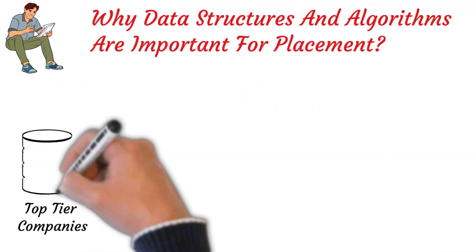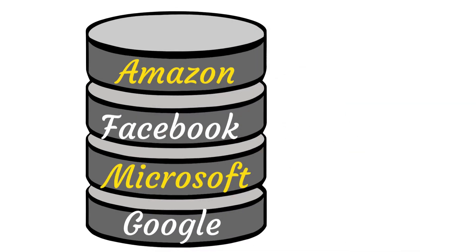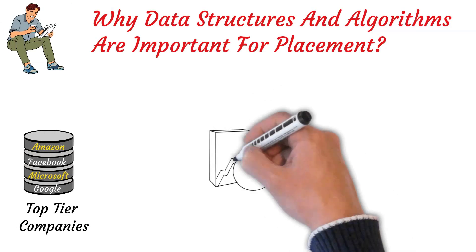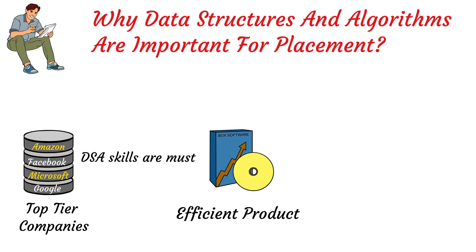So now let's move on to the next one. Why data structure and algorithms are important for placement? Top tier companies like Amazon, Facebook, Microsoft, Google, etc. have been working day in and day out for improving user experience and managing data most effectively. That is where data structure and algorithms come in. They are the key building blocks of important algorithms. So in order to develop an efficient product, data structure and algorithm skills are a must. And that's the reason why interviews conducted by product based companies are centered around analyzing candidates' knowledge of data structure and algorithms. They look for candidates having a strong grasp of algorithm skills.